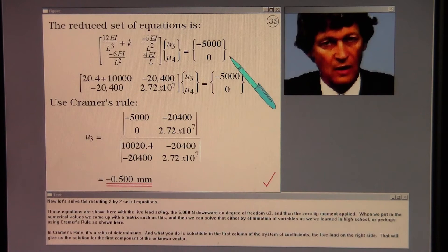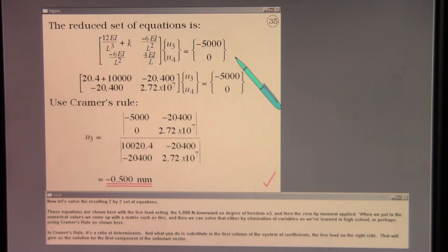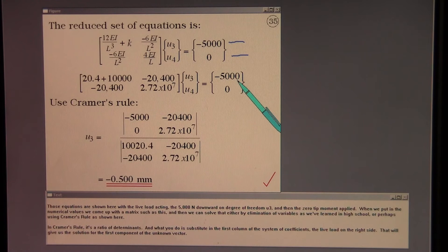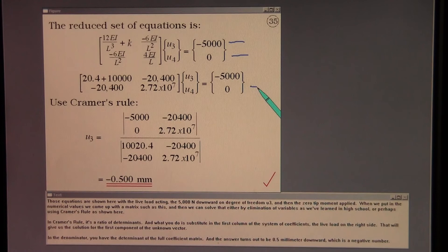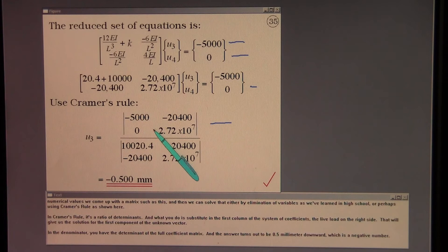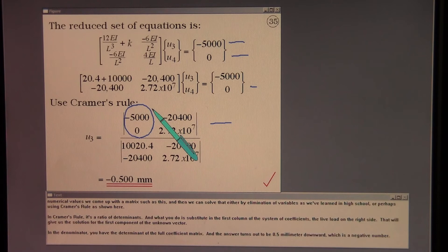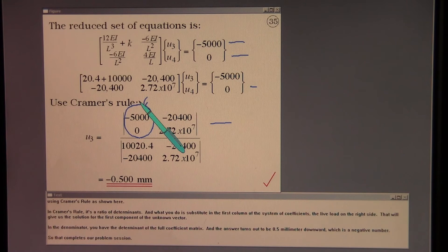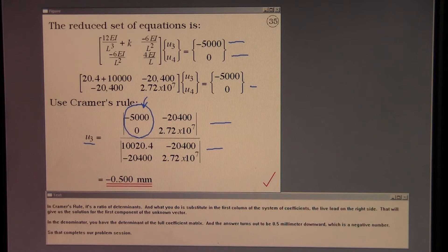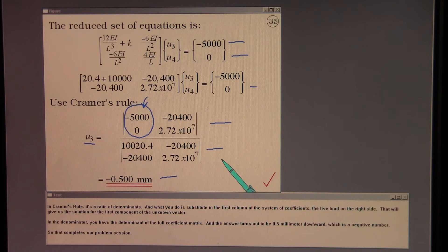Now let's solve the resulting 2 by 2 set of equations. Those equations are shown here with the live load acting, the 5000 newtons downward on degree of freedom U3 and then the 0 tip moment applied. When we put in the numerical values we come up with a matrix such as this and then we can solve that either by elimination of variables as we've learned in high school or perhaps using Cramer's rule as shown here. In Cramer's rule it's a ratio of determinants and what you do is substitute in the first column of the system of coefficients the live load on the right side. That will give us a solution for the first component of the unknown vector. In the denominator you have the determinant of the full coefficient matrix. And the answer turns out to be one half millimeter downward which is a negative number. So that completes our problem session.